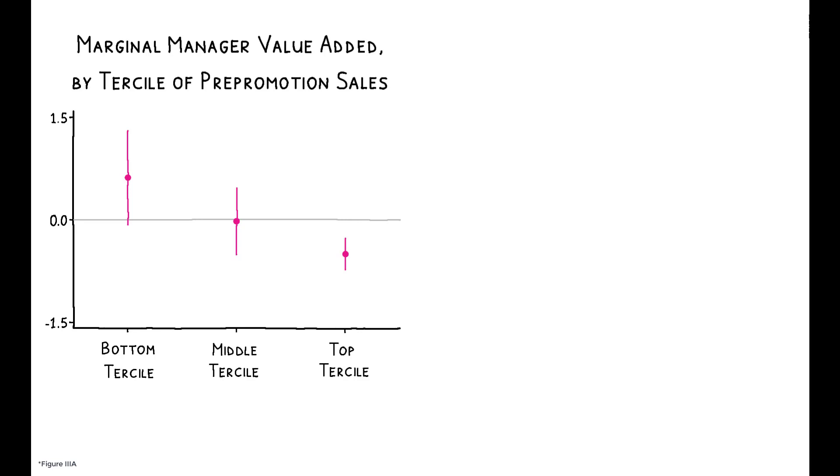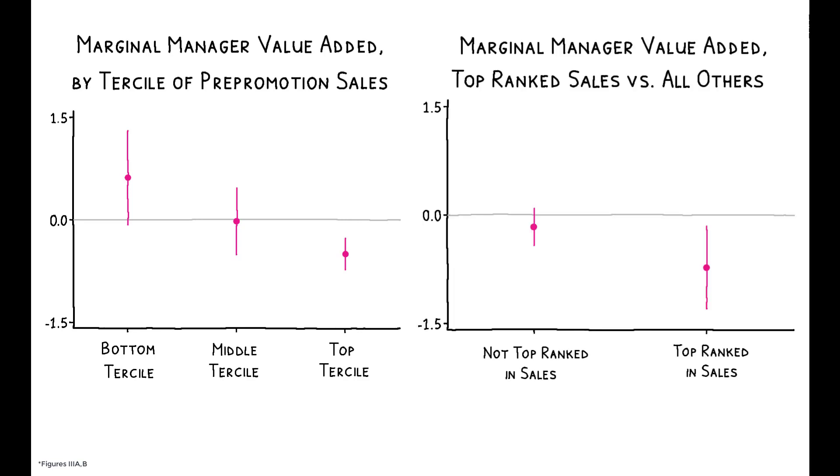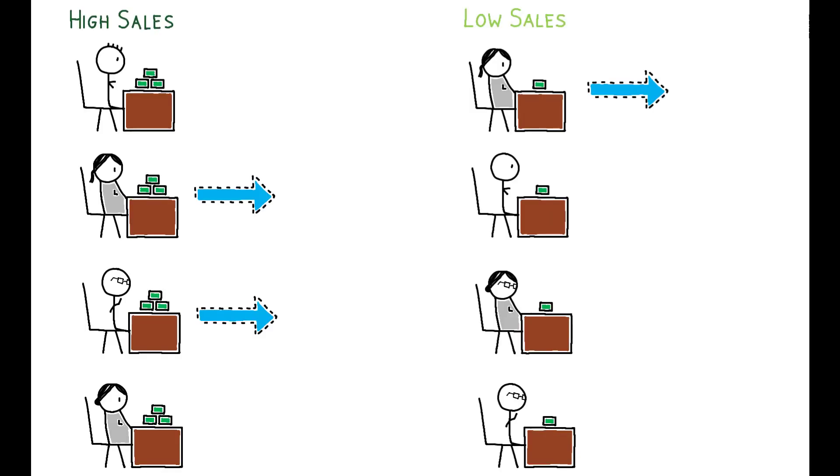And while the top-ranked salesperson in a given team is three times more likely to be promoted, they are actually worse managers on the margin. These results imply that firms discriminate in favor of high sales workers by applying lower standards when evaluating them for promotion. An alternative policy that promotes more low sales workers and fewer high sales workers on the margin would increase overall managerial quality.